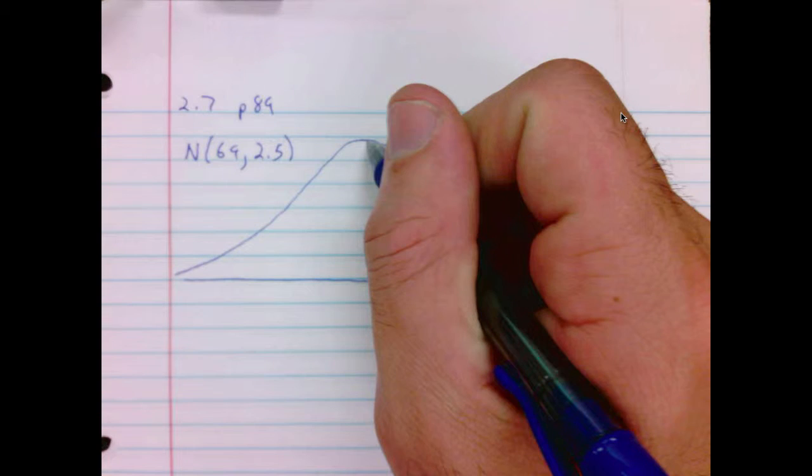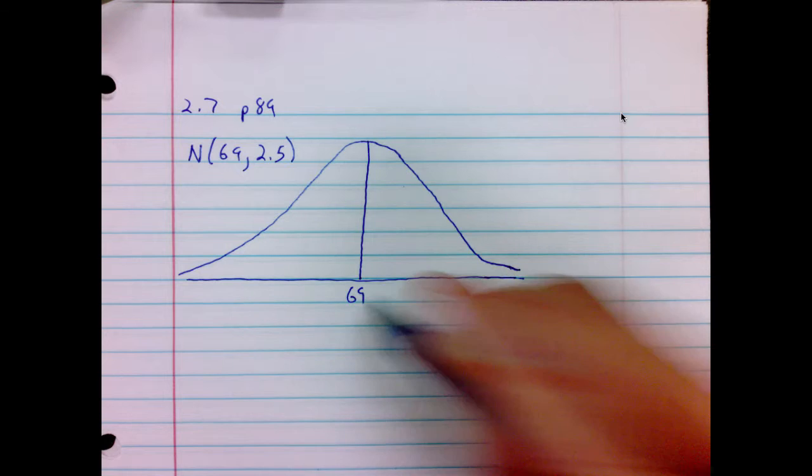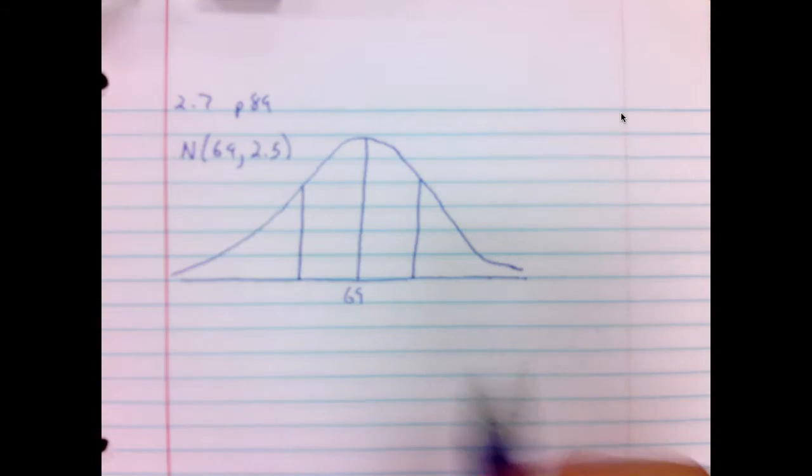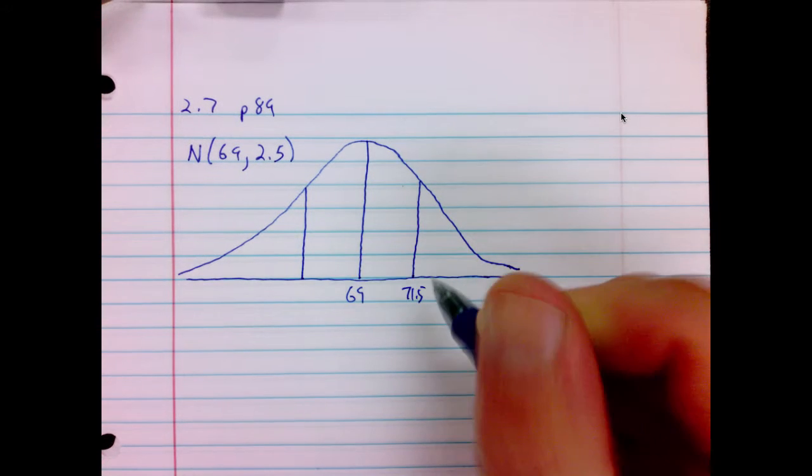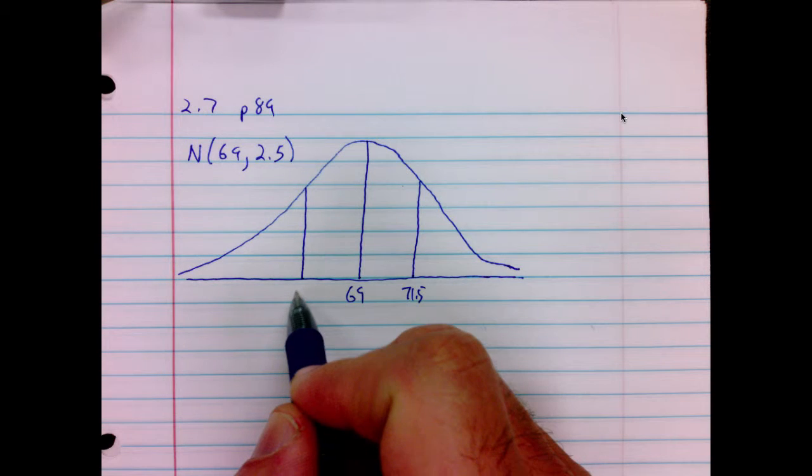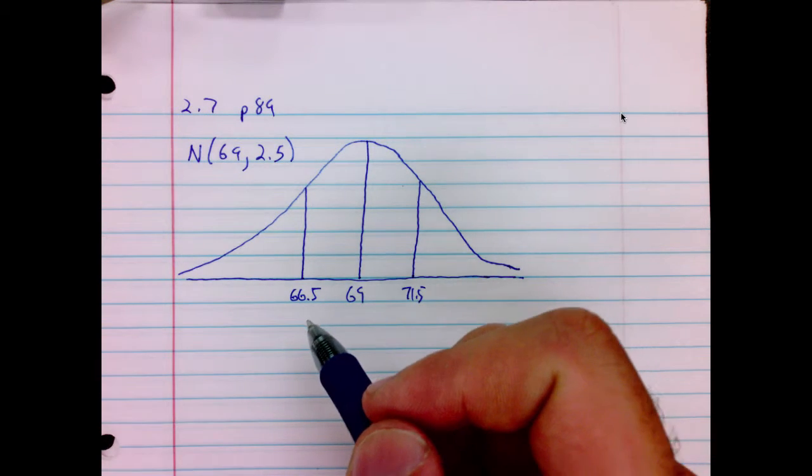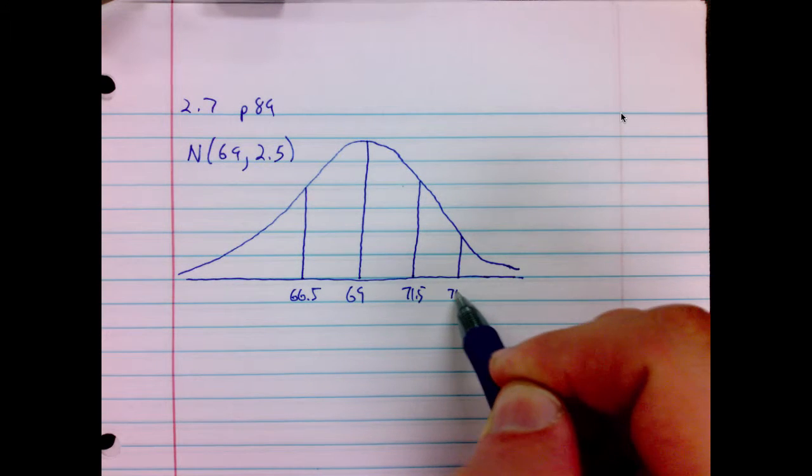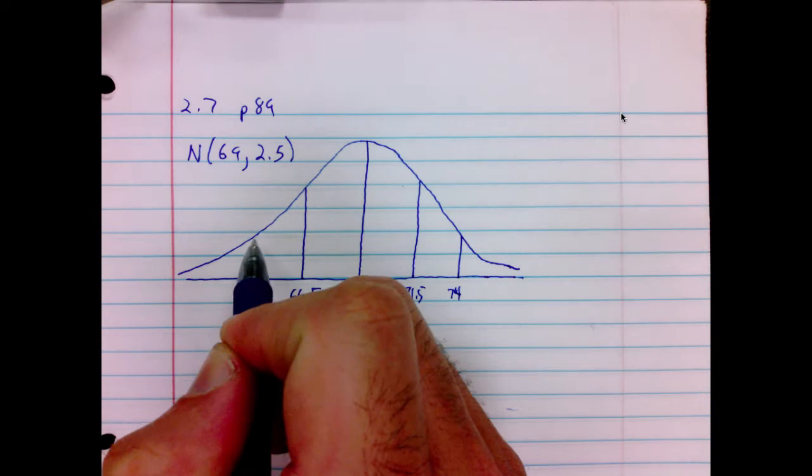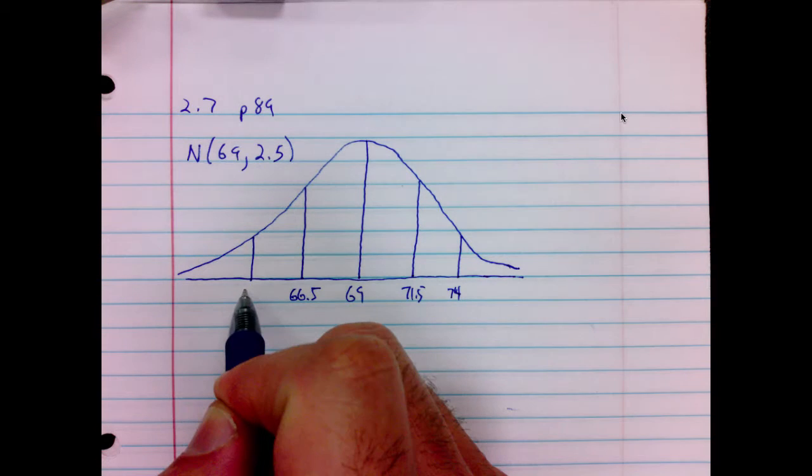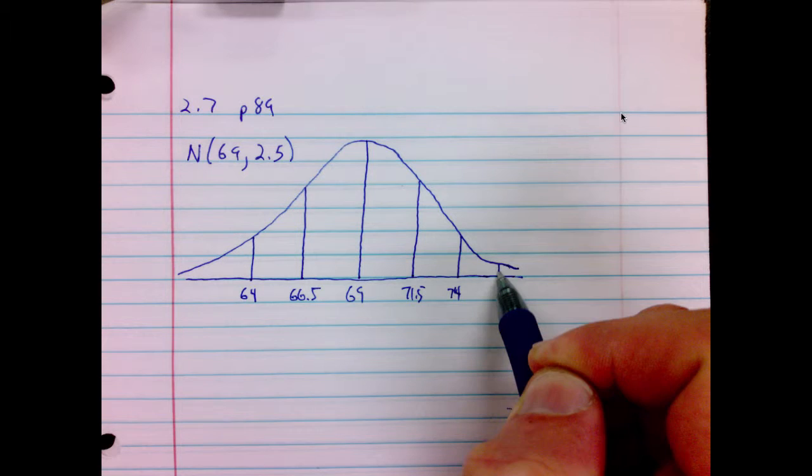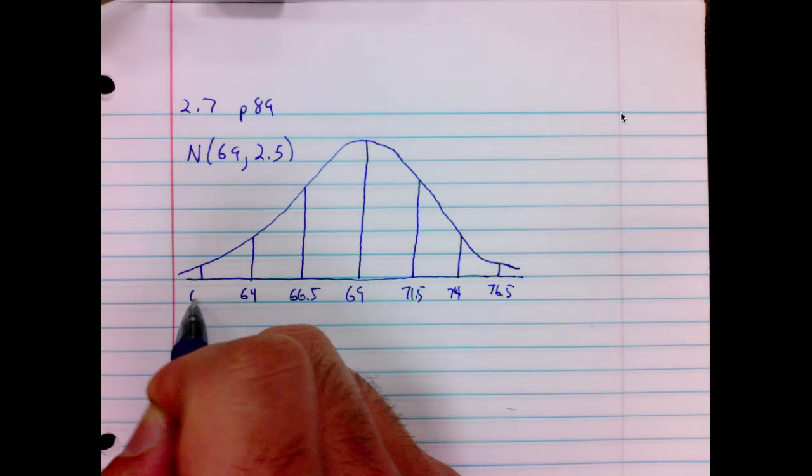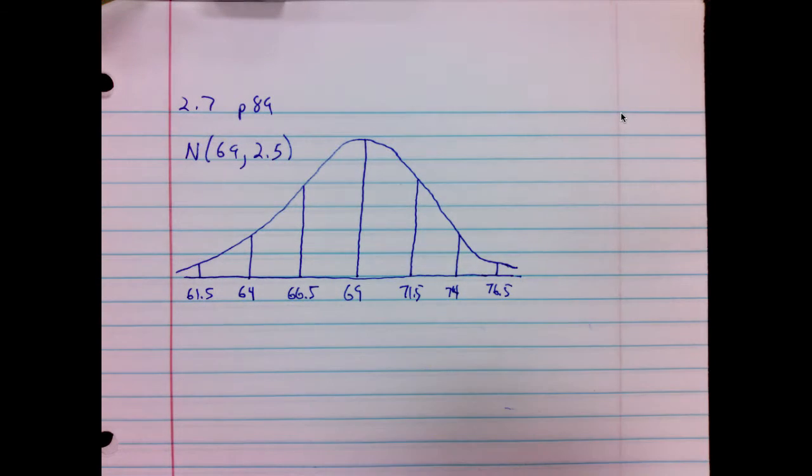I'll begin by drawing a line down the center. This is our mean, 69. I will then increase one standard deviation and decrease one standard deviation. So 69 plus 2.5 is 71.5, 69 minus 2.5 is 66.5. Adding another 2.5 above yields 74, subtracting another 2.5 gives 64. Adding another 2.5: 76.5, subtracting another 2.5: 61.5.